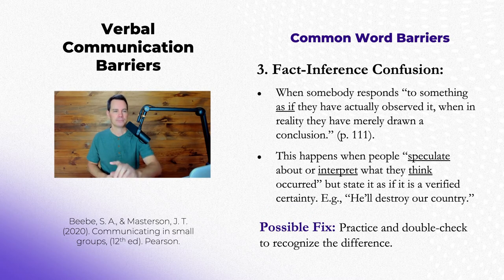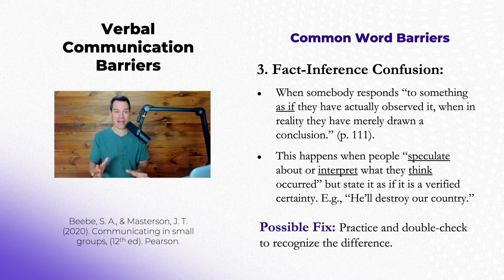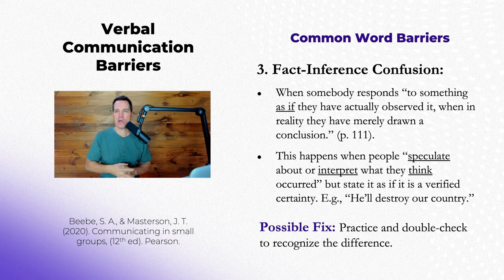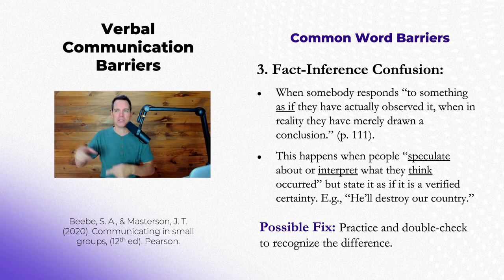Number three is fact-inference confusion — I may make a whole separate video on this, it's a big one. That's when someone responds to something as if they have actually observed it — it's a fact, in other words — but the reality is they've just drawn a conclusion about it. For example, if I saw someone I already feel a little paranoid about walking through my building, I might draw the conclusion, oh, that person's snooping around. The fact is they walked to the building; my inference is they were snooping around, they were spying on us.